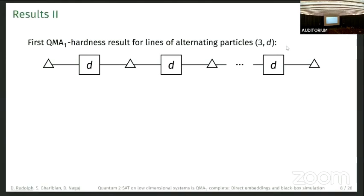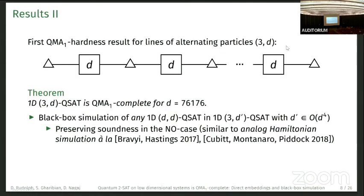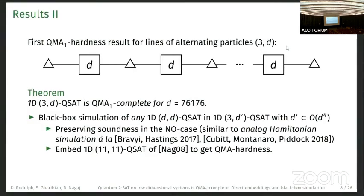On the line, we have the first QMA1-hardness result for lines of alternating particles where the smaller dimension is three — so think of alternating qutrits and qudits. We show QMA1-completeness for a specific dimension d. The reason d is so large is our black-box simulation technique: we take any 1D Hamiltonian on qudits and turn it into a three-by-d'-SAT, but this increases the dimension to roughly the fourth power. Soundness preservation is analogous to analog Hamiltonian simulation results by Bravyi, Hastings, and others. We embed the 1D QSAT problem on 11-by-11 systems to get QMA-hardness.